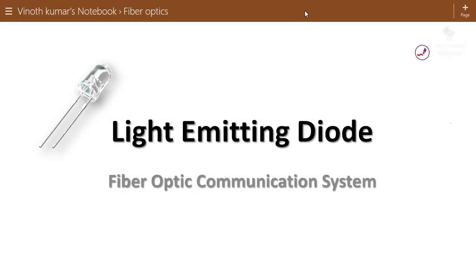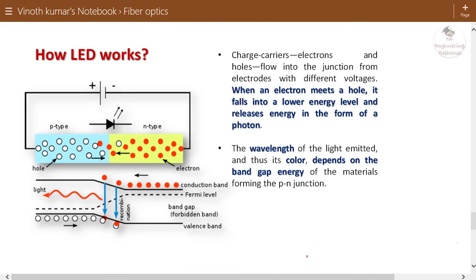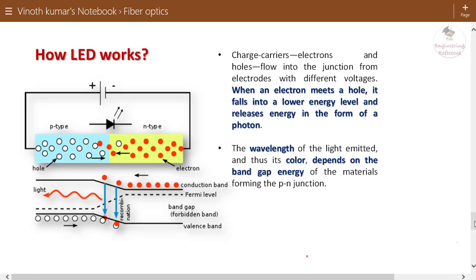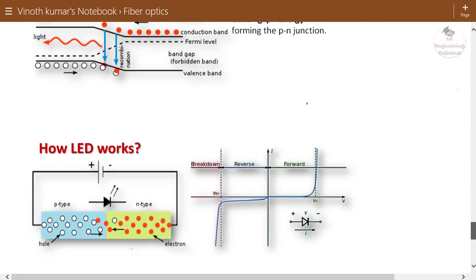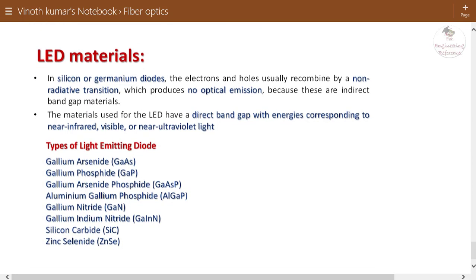Hello everyone. In this video, we are going to discuss the topic light emitting diode, in short form we call it as LED. This is one of the optical sources we use in our fiber optic communication system. We are going to study what is a light emitting diode, how it works, the working principle behind light emission from the pn junction diode, its IV characteristics, and the materials used to manufacture the light emitting diode.